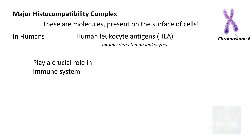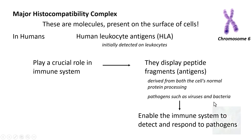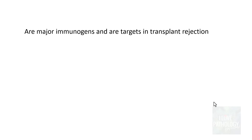HLA or MHC play a crucial role in the immune system. They display peptide fragments — which are antigens — and these antigens can be derived from the cell's own normal protein processing or from pathogens such as viruses and bacteria. This enables the immune system to detect and respond to those pathogens, constituting the body's defense mechanism against infection and disease. It is also important to note that these are the major immunogens and their targets in transplant rejection.